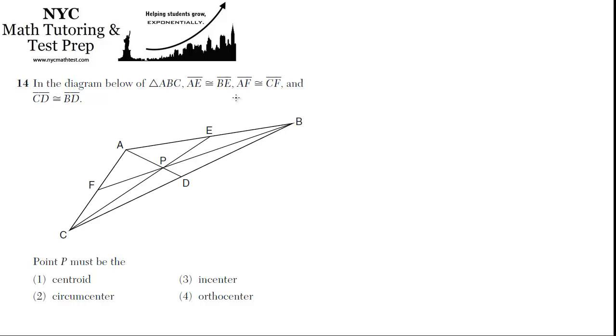14. In the diagram below, triangle ABC, AE is congruent to BE. So let's jot this down: AE congruent to BE, AF congruent to CF, and CD congruent to BD.